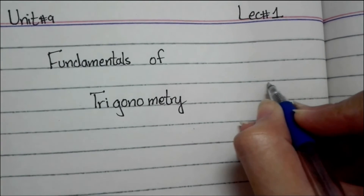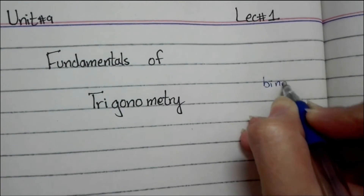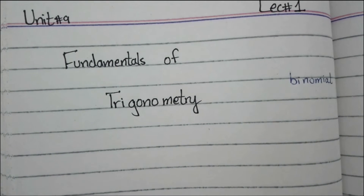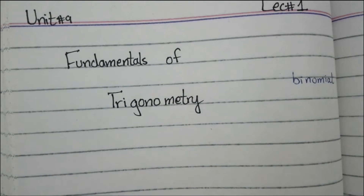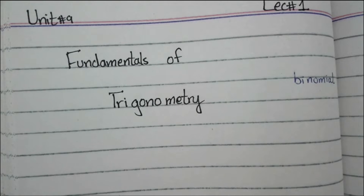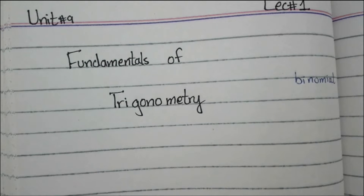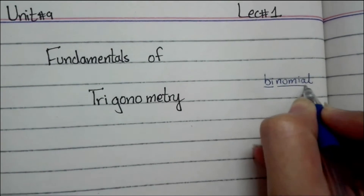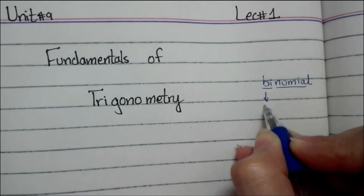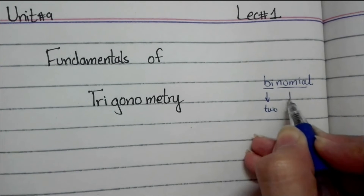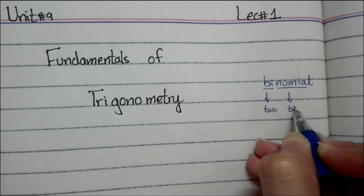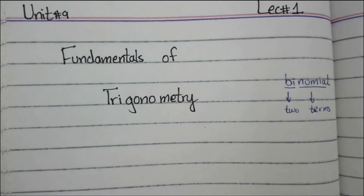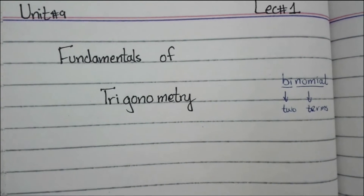When I start a new topic, I always tell you two things: the meaning and the definition. Because until you know the meaning, you will not understand the concept. When you understand the meaning, your interest will be found. For example, when I started chapter number 8 on binomials, I explained that binomials means an expression with two terms — that is why it is called binomials. We will similarly understand the name of trigonometry.